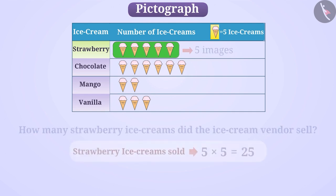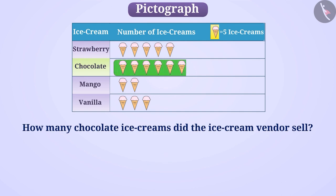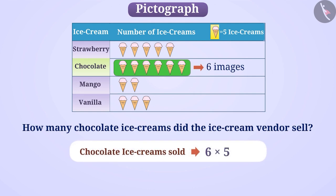Similarly, find the number of ice creams of the other types. It is very easy. Here, in the row of chocolate ice cream, six images are drawn, which means that the ice cream vendor sold 6 multiplied by 5, which is equal to 30 chocolate ice creams.